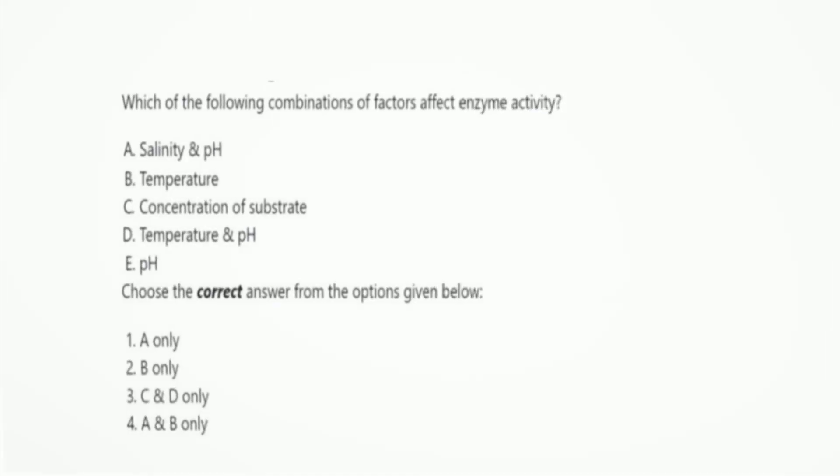Next question: which combination of factors affects enzyme activity? The options are salinity and pH; temperature; concentration of substrate; and temperature and pH. The right answer is option 3, C and D only — that is, concentration of substrate, temperature, and pH are the factors which affect enzyme activity.